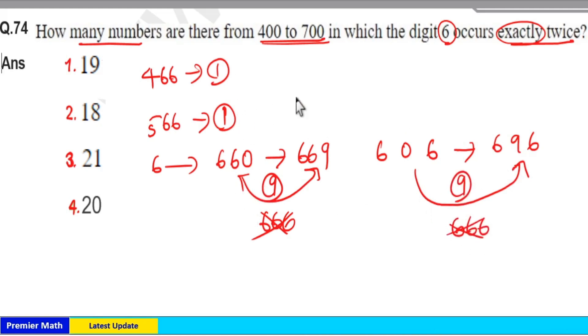So 9 plus 9 plus 2, 18 plus 2, 20 numbers are possible. Option 4 is your answer.